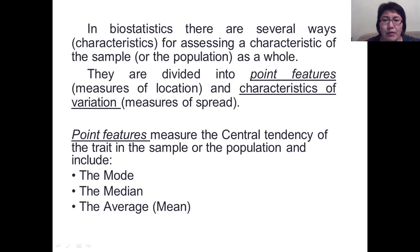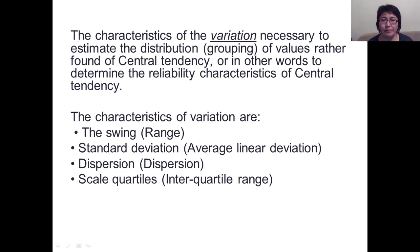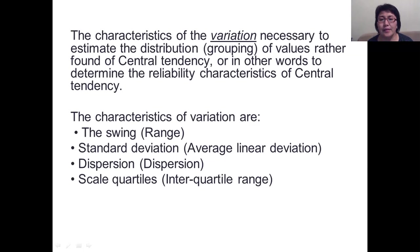In biostatistics, there are several ways of assessing characteristics on the sample as a whole. These are divided into point features and characteristics of variation. Point features measure the central tendency of the sample or population, and they include the mode, the median, and the mean. The characteristics of variation are used to estimate the distribution of values around the central tendency, and they include the range, standard deviation, dispersion, and scale quartiles.